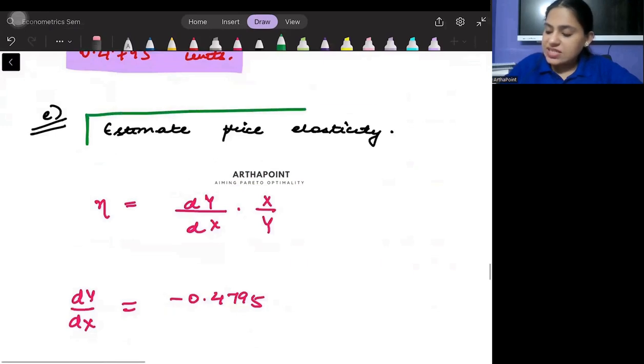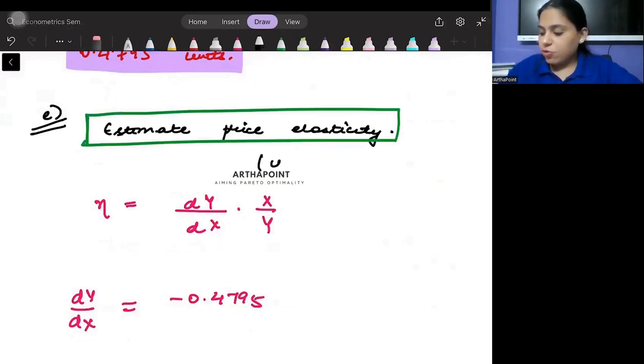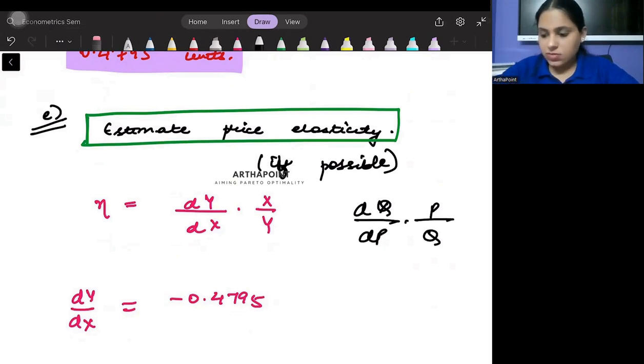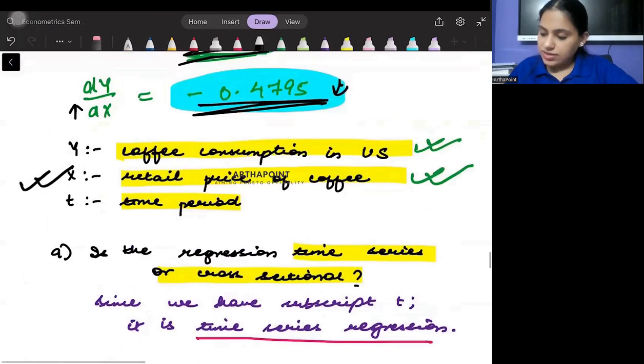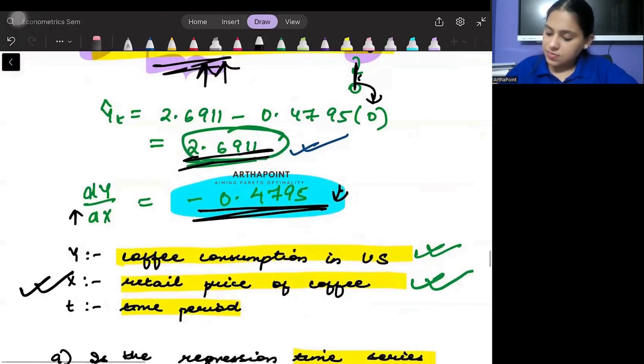The next question says estimate price elasticity if possible. What is the formula of price elasticity? How quantity changes when price changes, times initial price divided by quantity - dQ/dP times P/Q. Now try to think about it.